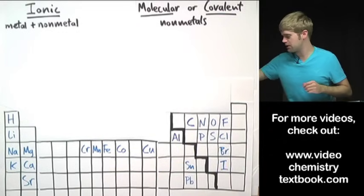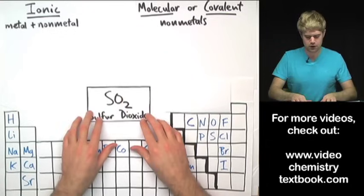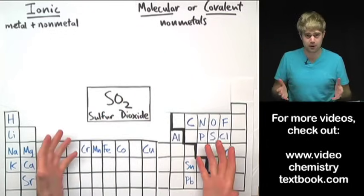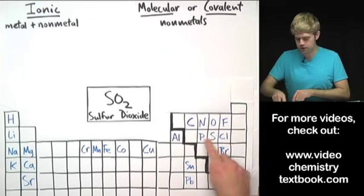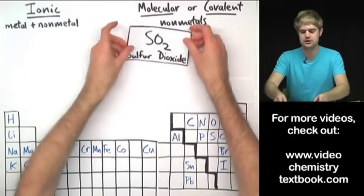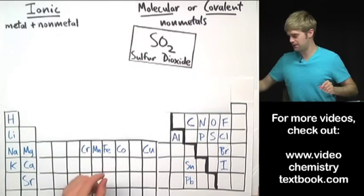So here are a couple of examples. The first one, sulfur dioxide. What are the elements it's made of? It's made of sulfur and oxygen. Both of these are non-metals, which means that sulfur dioxide, SO2, is a molecular compound.